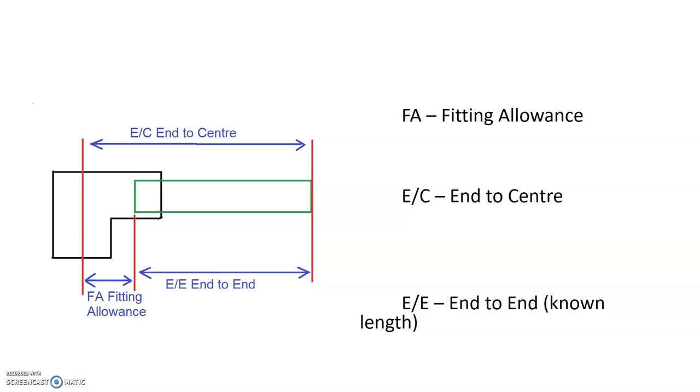The other measurement is our end-to-center. Our end-to-center is from the center of our fitting. We now have a piece of pipe dry-fitted into our fitting, so from the center of our fitting over to the end of the pipe that's been dry-fitted. That is known as our end-to-center measurement.